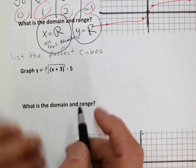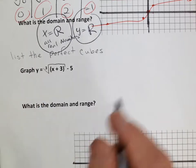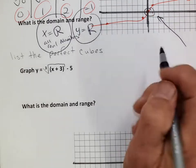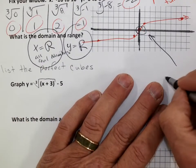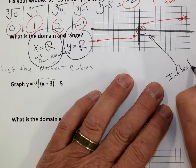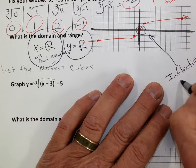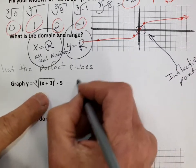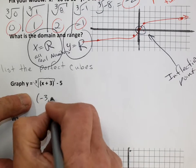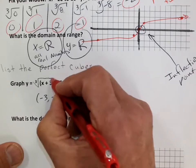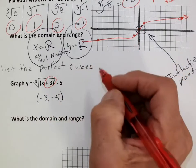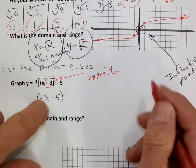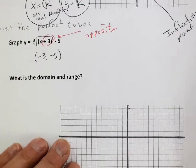Now let's graph the last example. This is another cube root. I'm going to call the bending point an inflection point — not a vertex. What I'm going to do is move my inflection point, like a vertex, to the point negative three, negative five, because it's always the opposite of the inside — that zeroes it out. So I go to negative three, negative five.